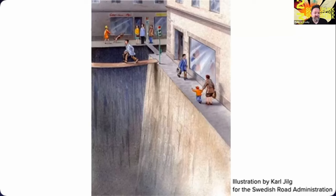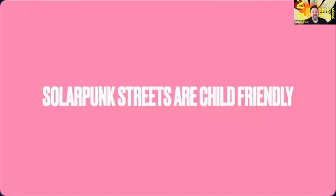So with that as a kind of introduction, I want to quickly lay out a series of six interrelated principles for solarpunk streets and then give some practical examples of how we can work towards them. The first and most important thing to note is that solarpunk streets are child-friendly — if we make streets and cities friendly for children, pretty much everything else will take care of itself.